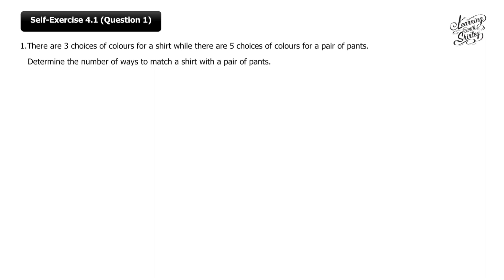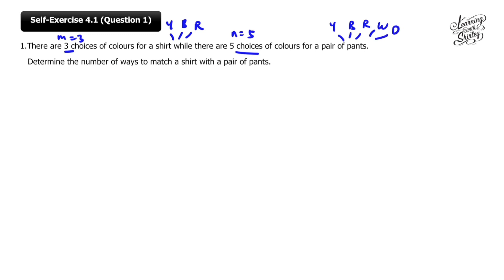Let's look at self-exercise 4.1, question 1. There are three choices of colors for a shirt and five choices of colors for a pair of pants. Determine the number of ways to match a shirt with a pair of pants — mix and match the outfit. Here, M is 3 (e.g., yellow, blue, red) and N is 5 (e.g., yellow, blue, red, white, orange). Using the multiplication rule, M times N equals 3 times 5, which is 15 ways.